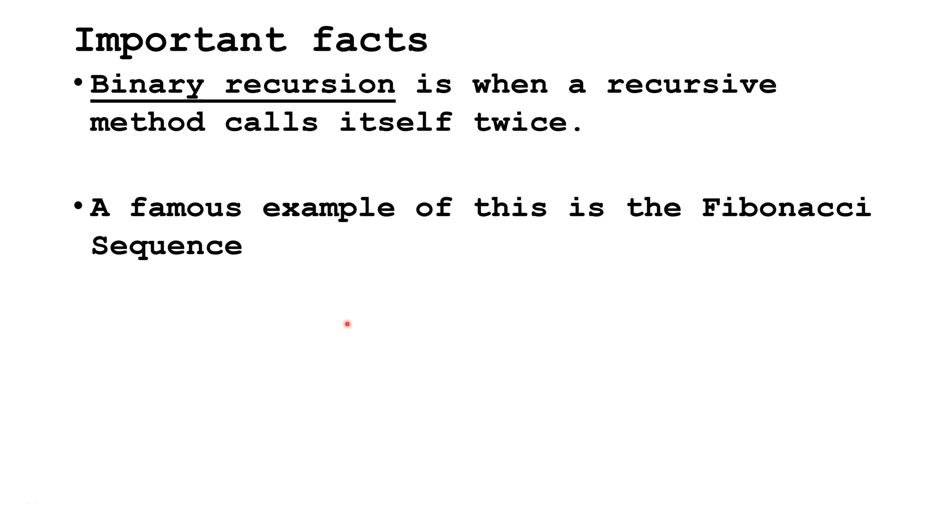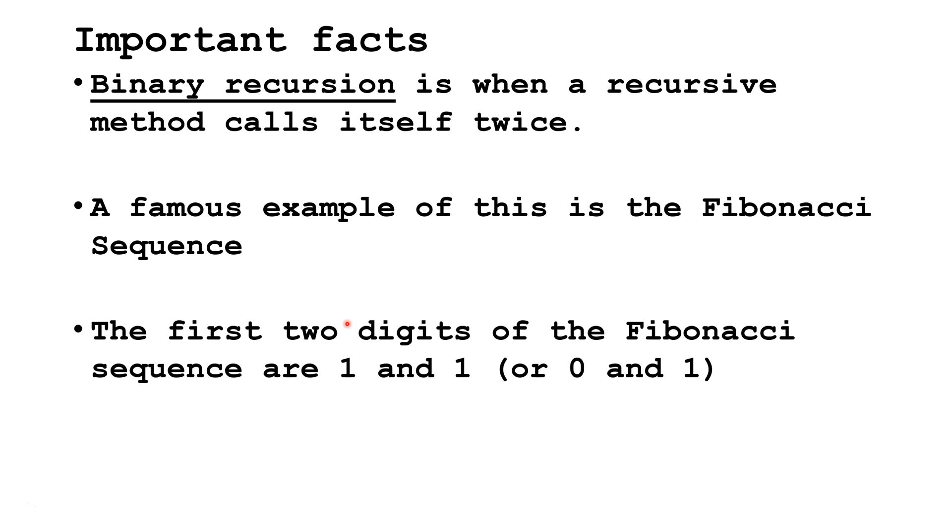A well-known example is using binary recursion to calculate the Fibonacci sequence. The first two digits of the Fibonacci sequence are 1 and 1, or sometimes 0 and 1.